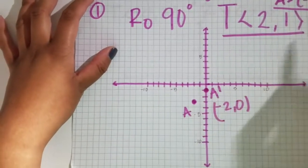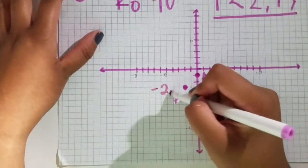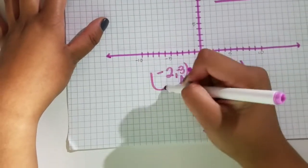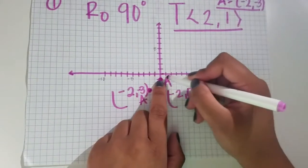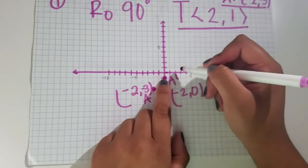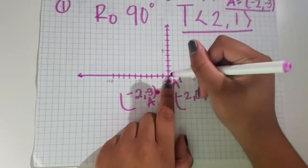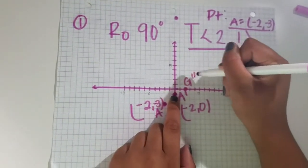And then you want to write your ordered pairs, so this is (-2,-3). Then you want to rotate A prime 90 degrees. When you rotate it 90 degrees, you will get (2,0). So that is A double prime.